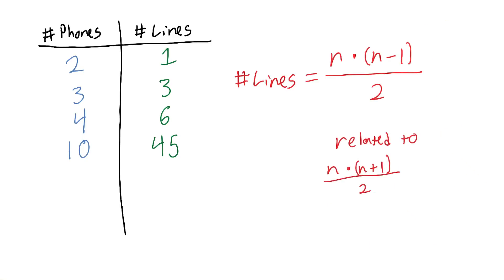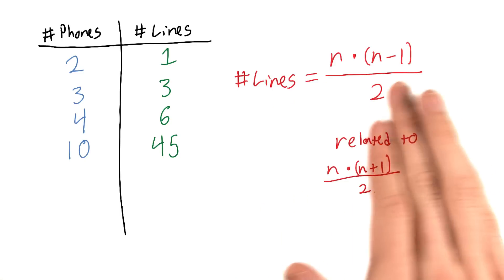Now, if you're a math geek, this is related to n times n plus 1 over 2, but in this case, n is 1 less than the number of phones. So, I've simplified to this equation here.